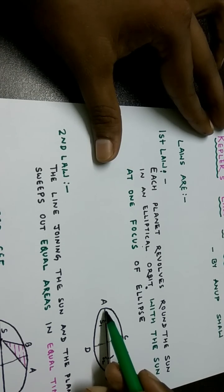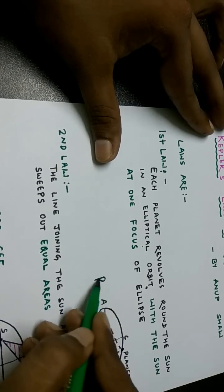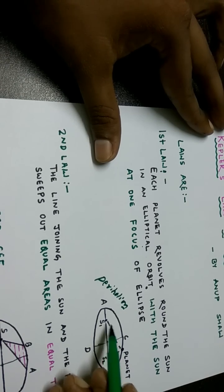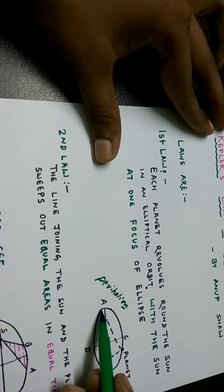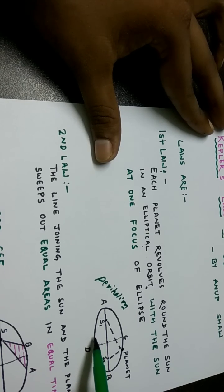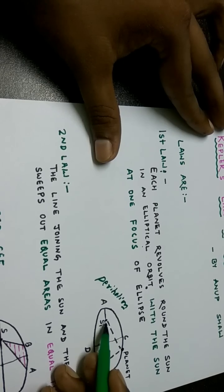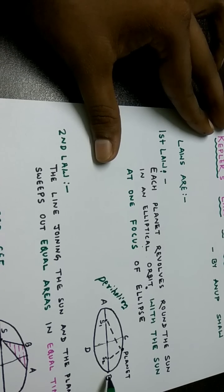When the planet approaches the Sun, it is found that at point A the distance between the Sun and planet is minimum, and that position is known as perihelion. As it approaches the Sun its speed increases, and when it goes past that point it moves away from the Sun and its speed gradually decreases. When it reaches point B, it is at maximum distance from the Sun — that position is known as aphelion.